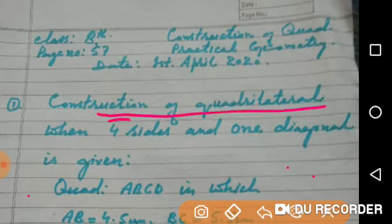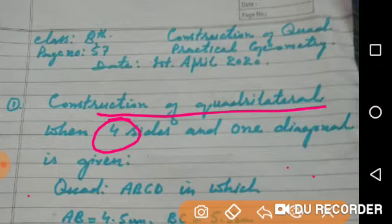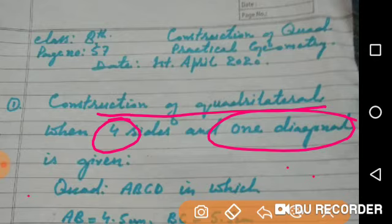This is a concept where you will be given 5 things or 5 parts of a quadrilateral and will be asked to construct it with the help of compass and ruler. So how to draw this kind of quadrilateral? Let us learn.